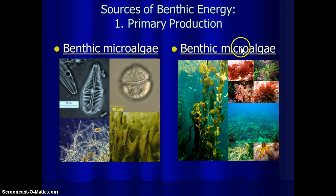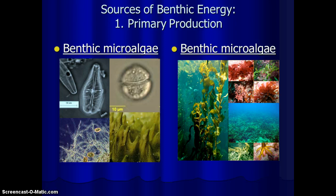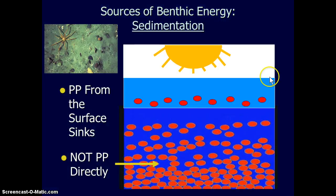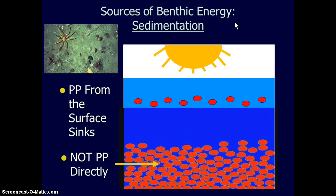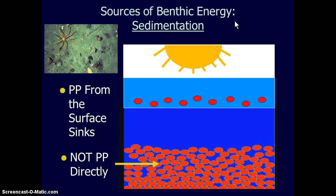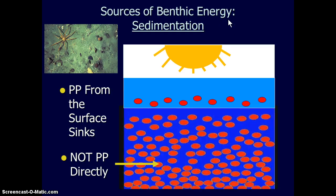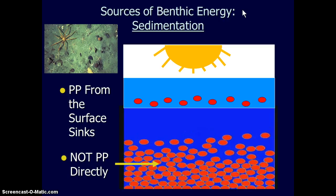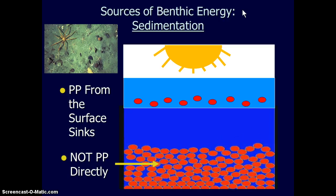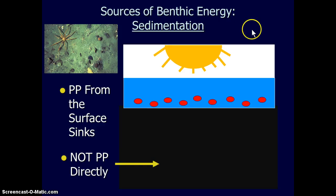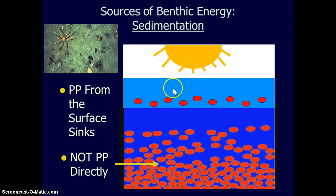So are the benthic macroalgae — macro meaning large algae. These are our seaweeds: our large kelp forests, our red and green kelps and algaes, and our seagrasses. Those are the two main primary production inputs of organic matter to the benthic environment. The second source applies to the majority of benthic environments, because primary production inputs occur mainly in the intertidal zones close to the coast, where sunlight can only penetrate to shallow depths. Most of the ocean is deep, so the majority of the seafloor gets its organic matter by sedimentation.